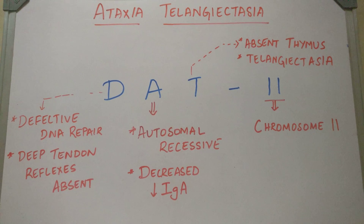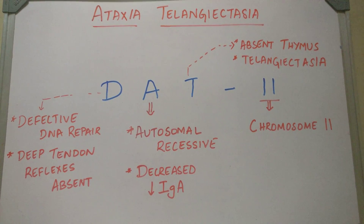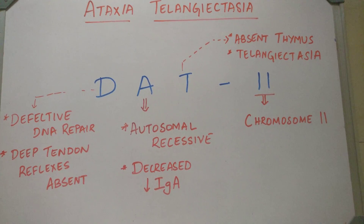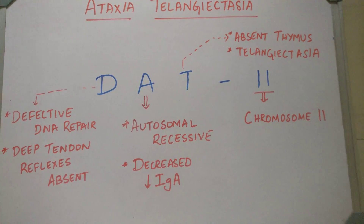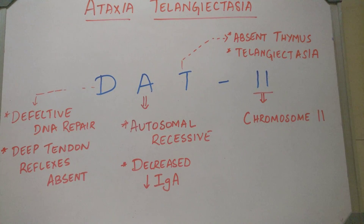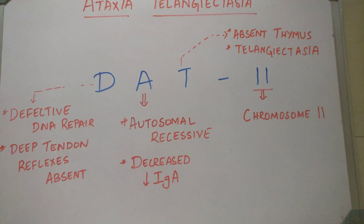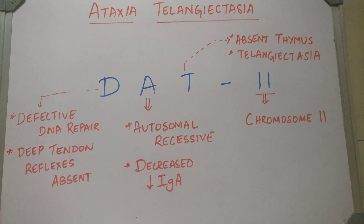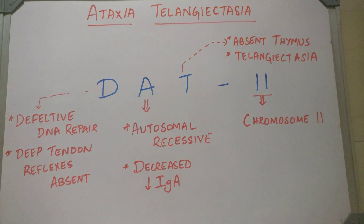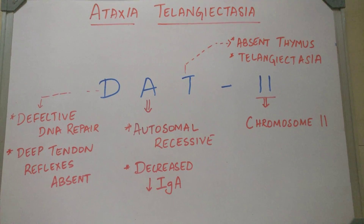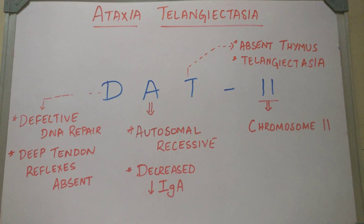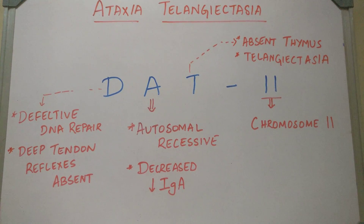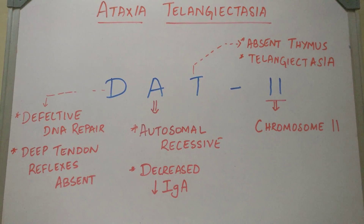So these are the features of Ataxia Telangiectasia in short, and the mnemonic is DAT-Leaven: an autosomal recessive disease caused by defective DNA repair, involving chromosome 11, with absent thymus, presence of Telangiectasia, decreased levels of IgA, and absent deep tendon reflexes. I hope this video has helped you guys — please like, share and subscribe. Thank you.